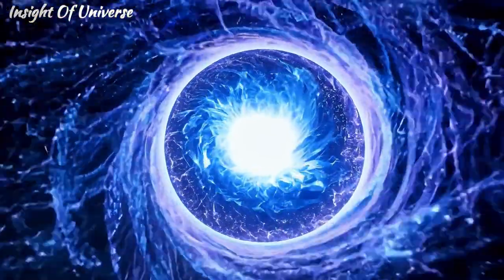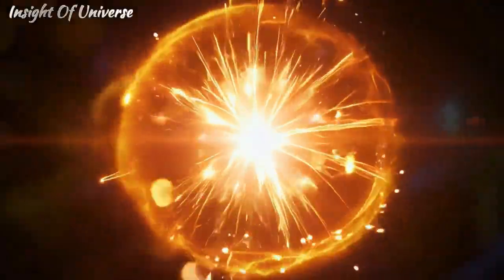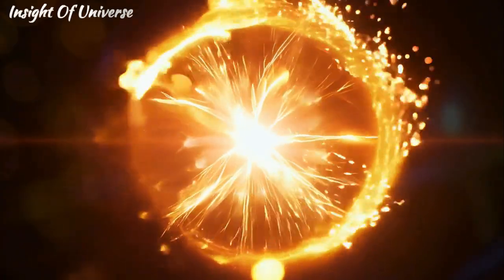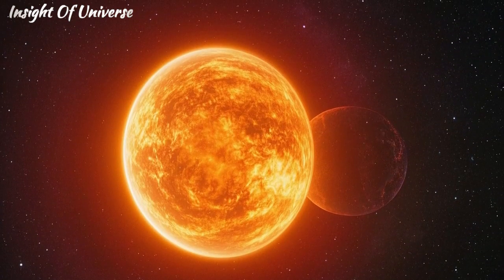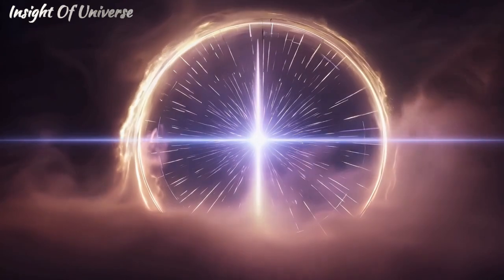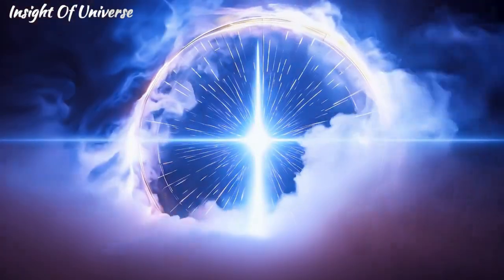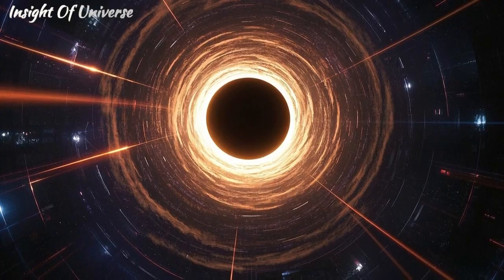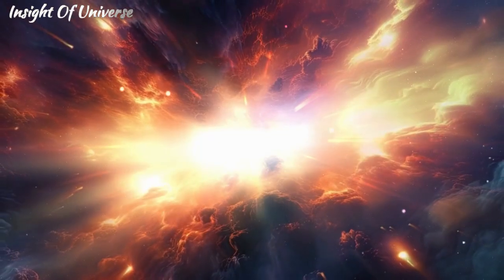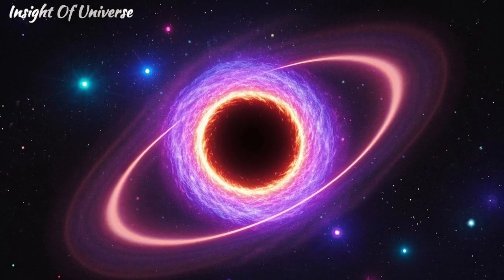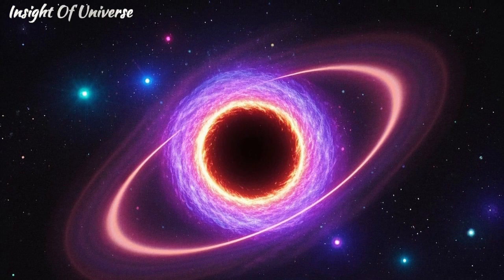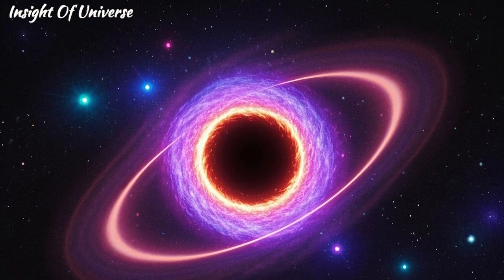These quasi-stars were colossal. We're talking about objects thousands of times larger than our sun, shining with the intensity of entire galaxies. Their energy came from matter falling into the central black hole, releasing staggering amounts of radiation. This process was so efficient that it kept the star stable, despite the gravitational monster at its heart.